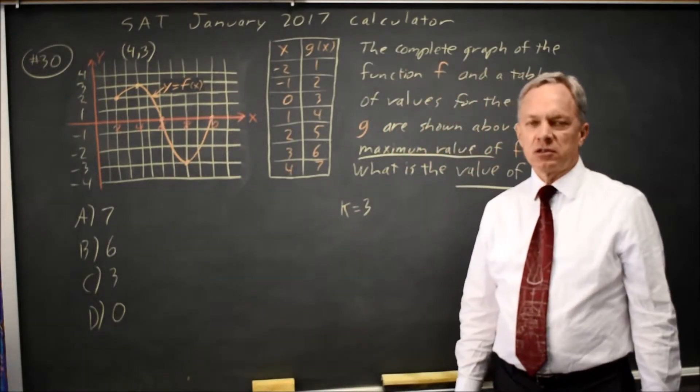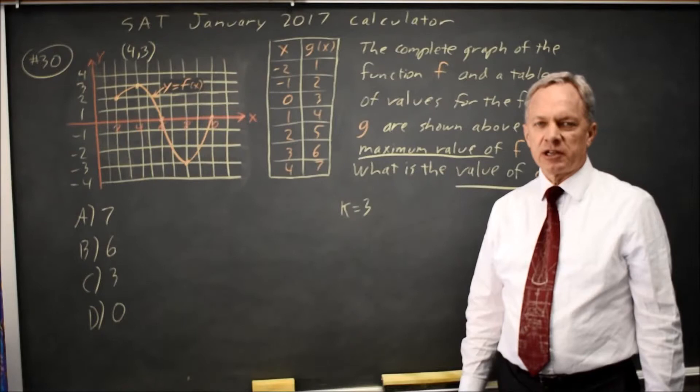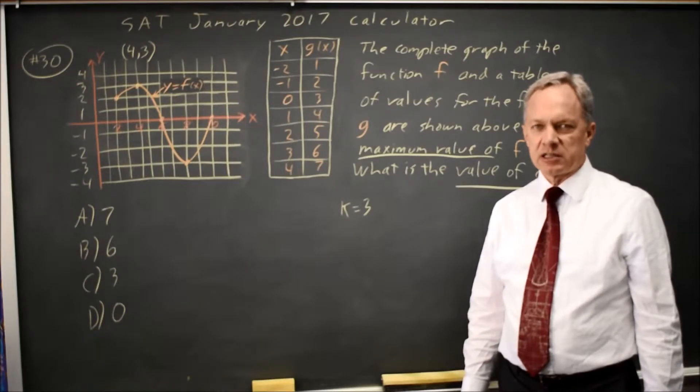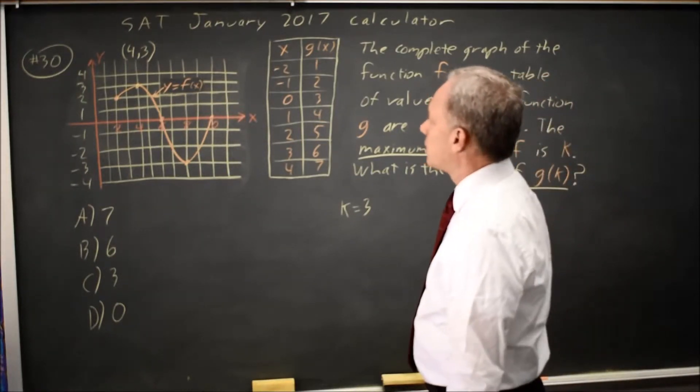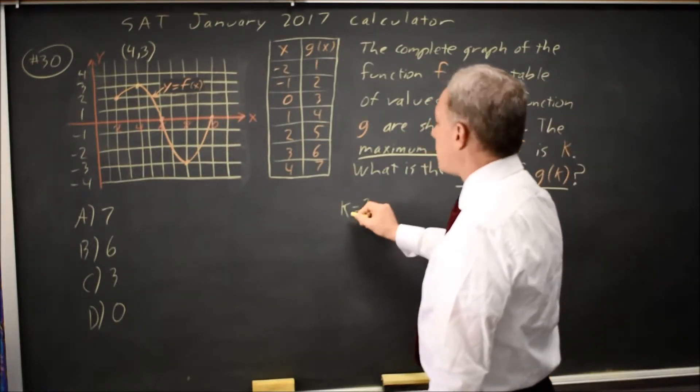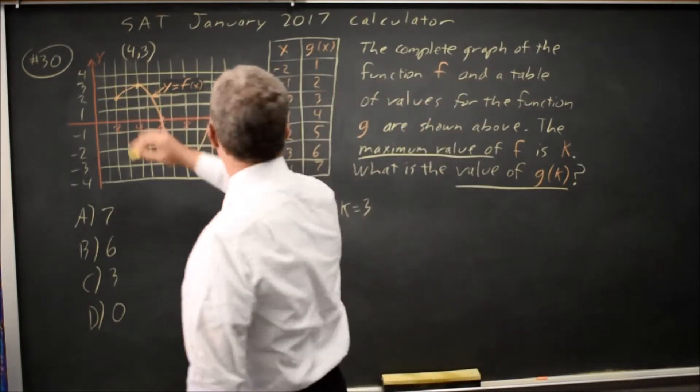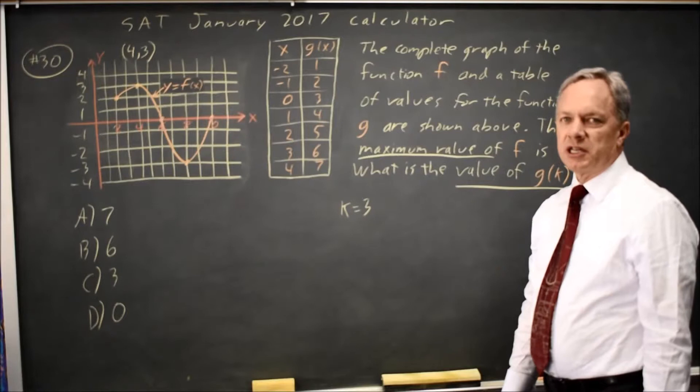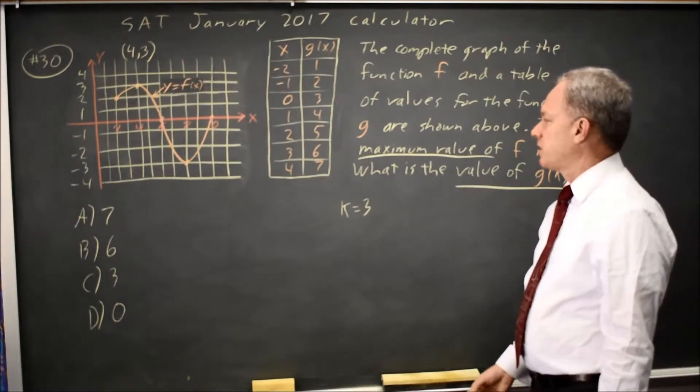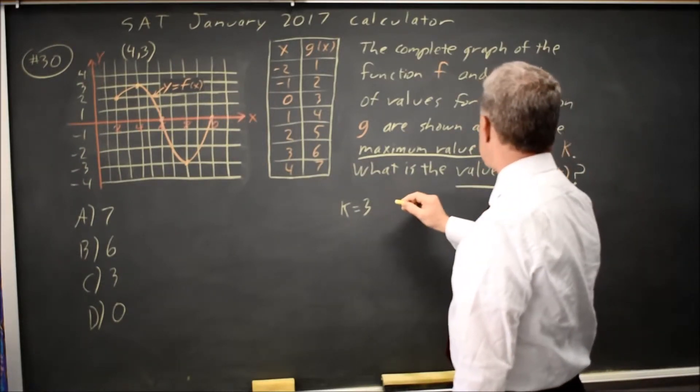When they ask where a maximum occurs, they're asking for the x, the horizontal axis. When they ask for the maximum value, that's the vertical axis, in this case the y value, or f of x. And the y value is 3, so that's the number they're asking for here. It's important to read carefully to make sure you're using the correct number from the coordinates of a point.